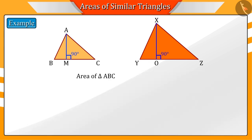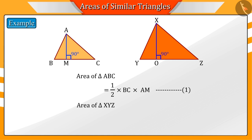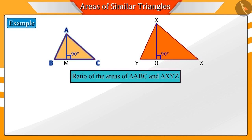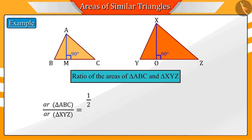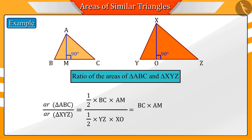The area of triangle ABC is half multiplied by BC multiplied by AM. And the area of triangle XYZ is half multiplied by YZ multiplied by XO. Since we have to find the relation between the ratio of the corresponding sides and the area of the triangles, we find the ratio between the areas of triangle ABC and triangle XYZ, which is represented by equation 3.